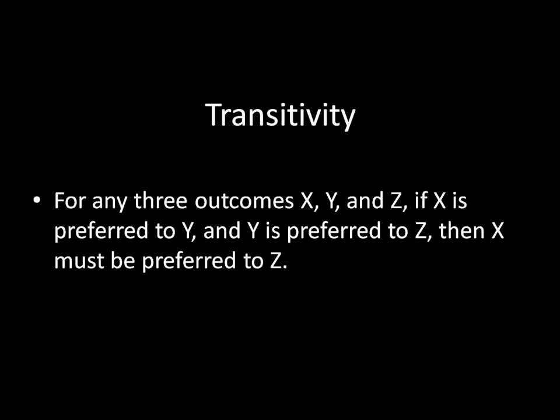Transitivity requires the following: for any three outcomes x, y, and z, if x is preferred to y, and y is preferred to z, then x must be preferred to z as well.